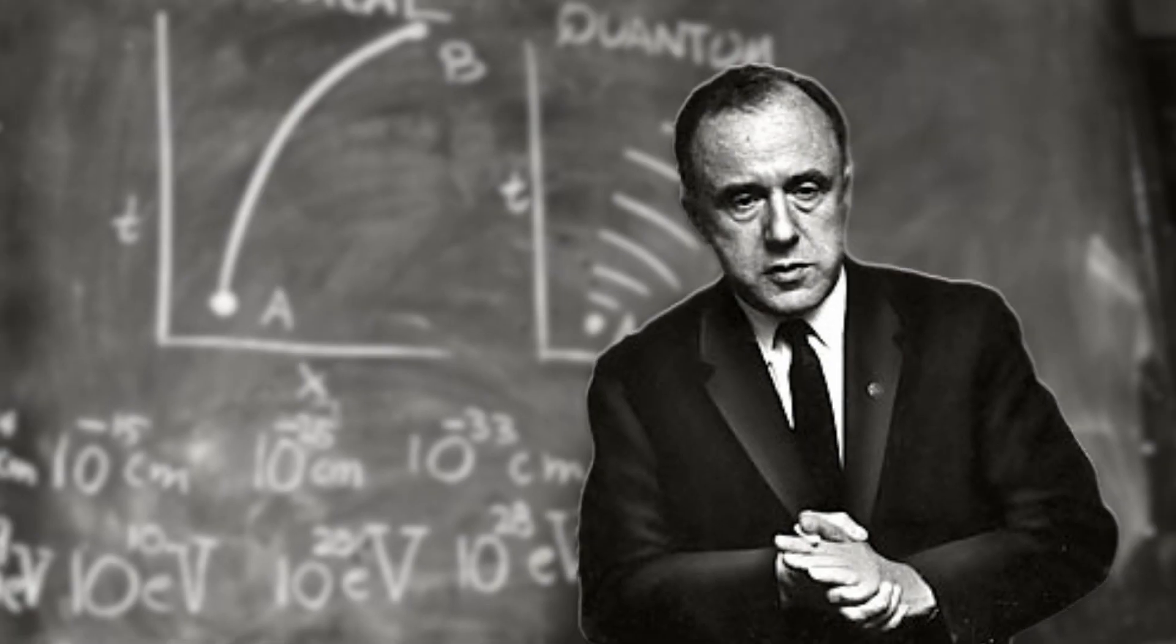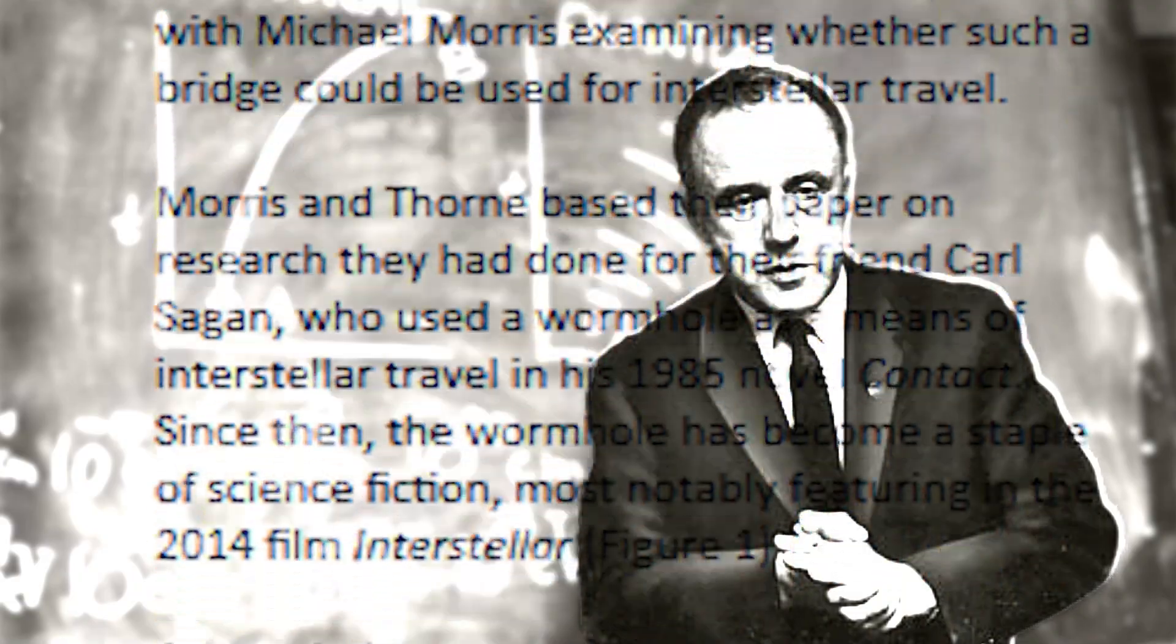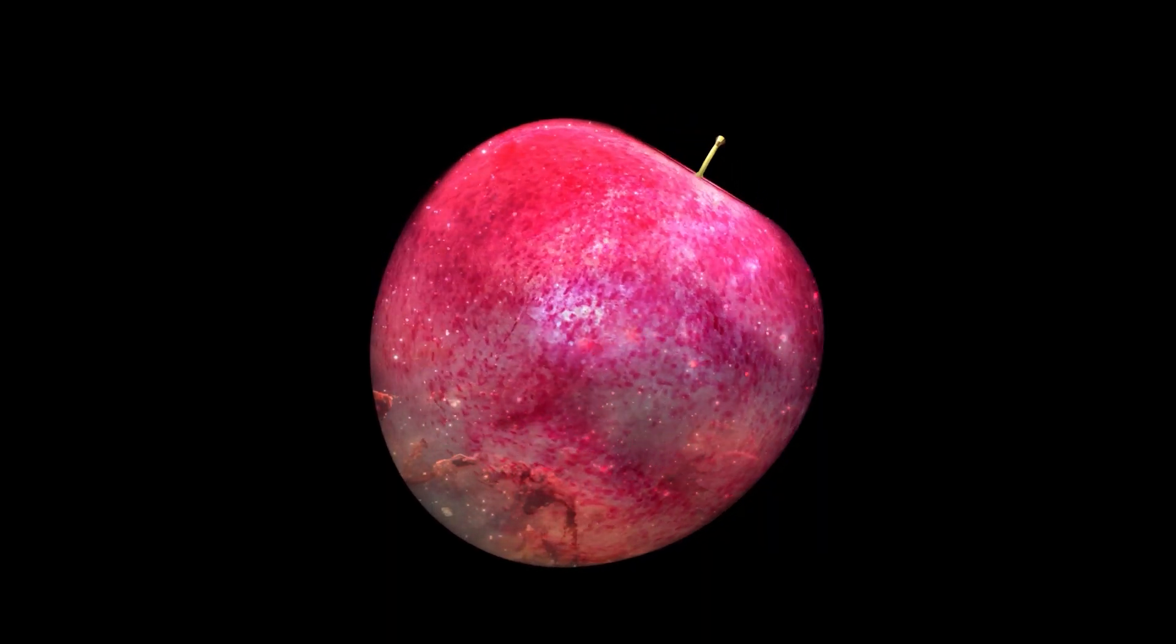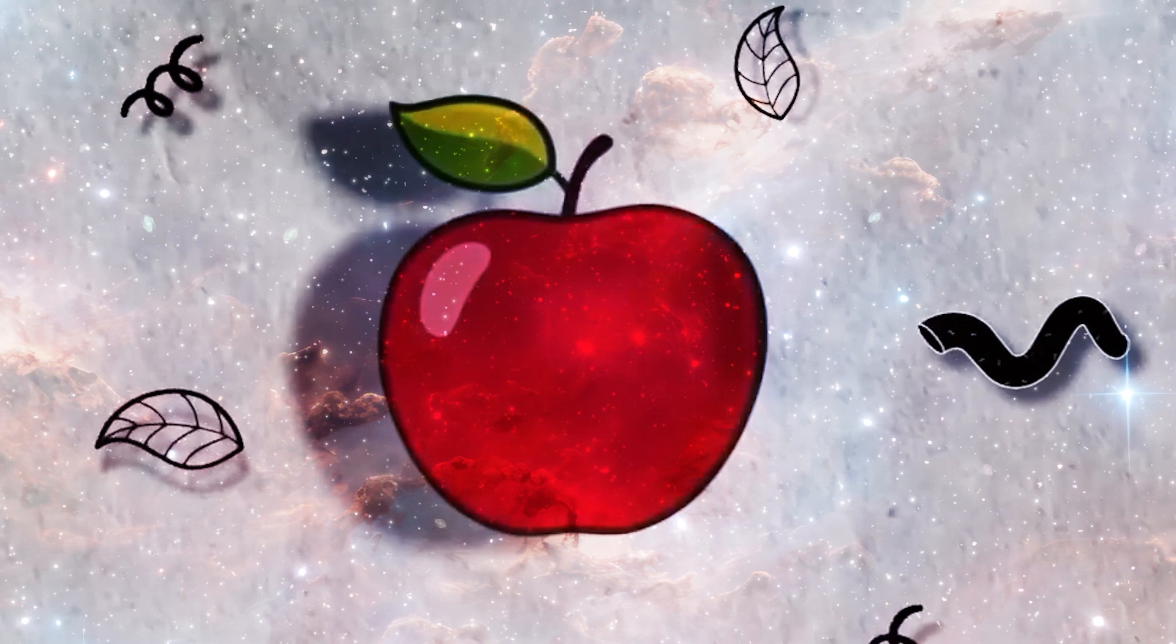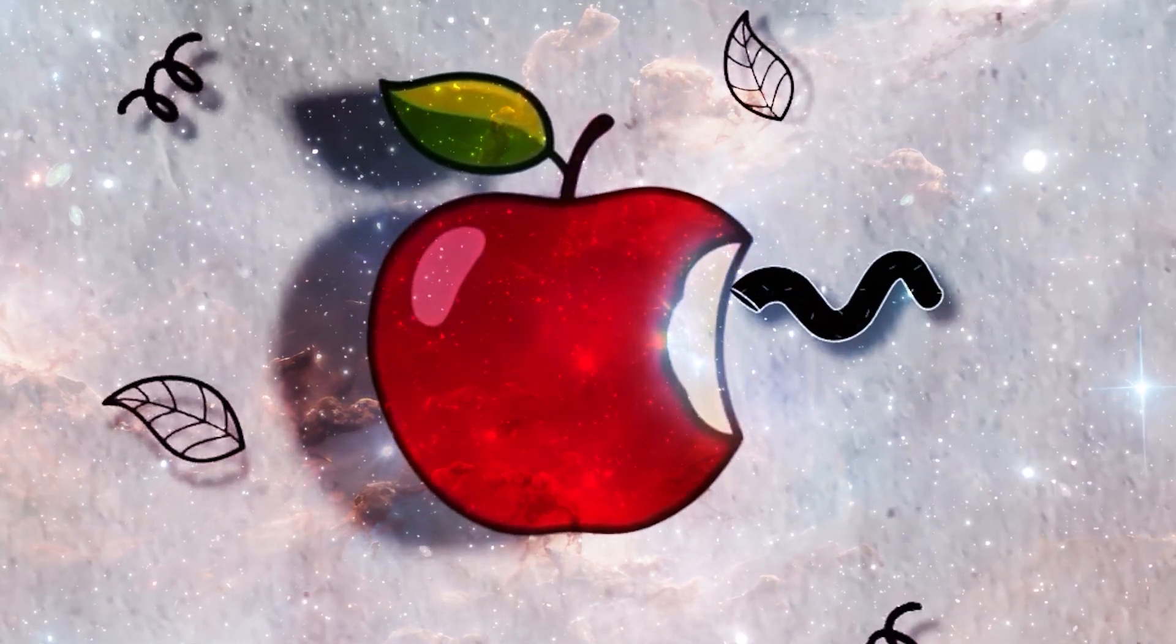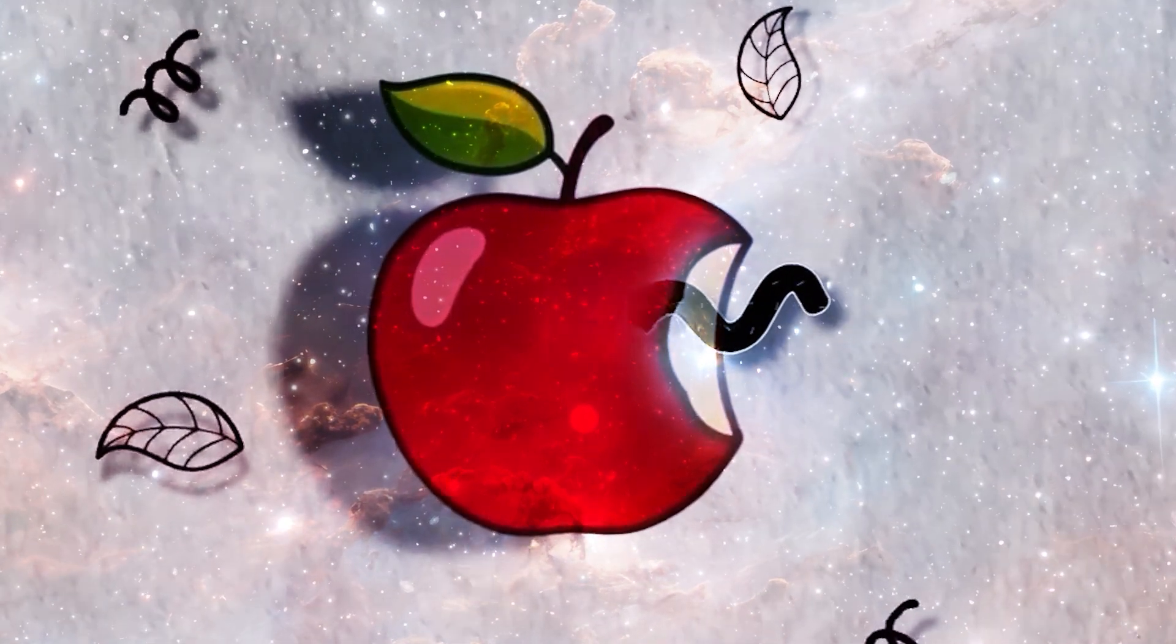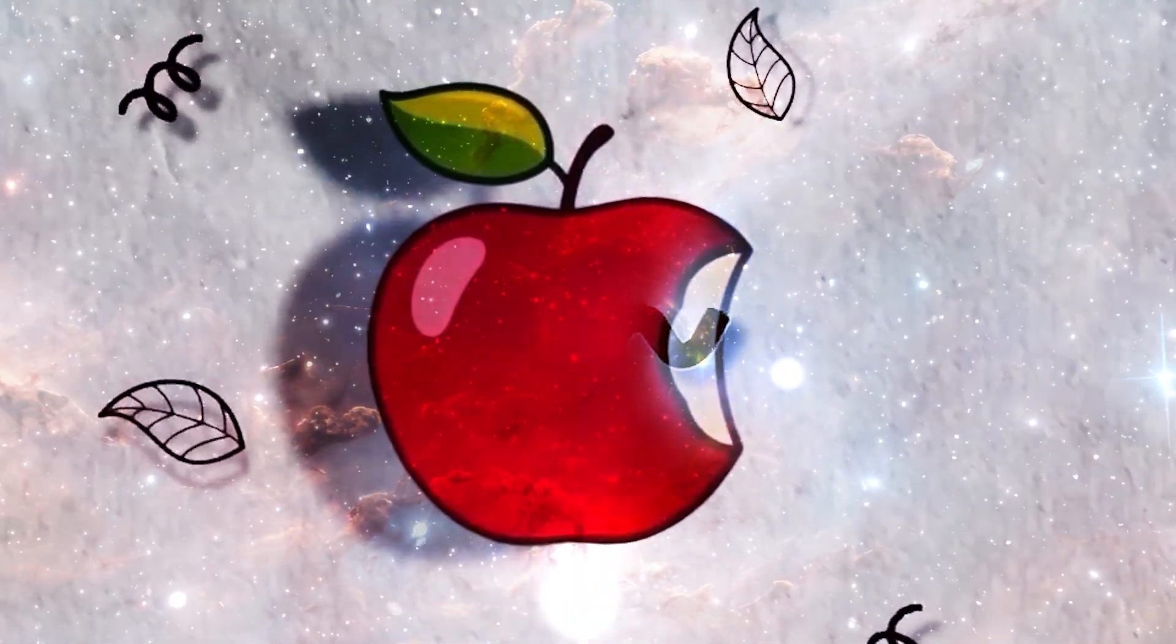John Wheeler, in the year 1957, in his paper on Einstein-Rosen Bridge, compared it to a similar analogy. Let's say we have an apple, and let's say an insect, a worm, is eating it. They reach from one side to the other of the apple while eating it, or they travel through the middle of the apple. This will cause the worm to travel shorter distances.